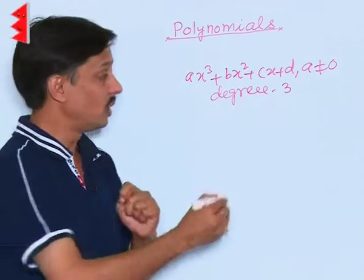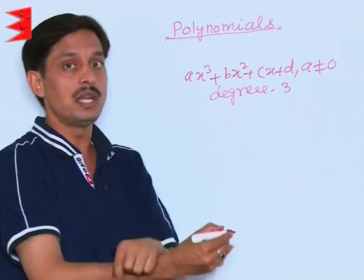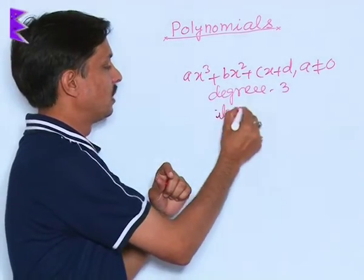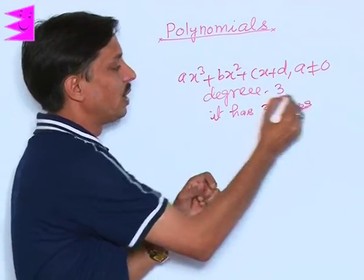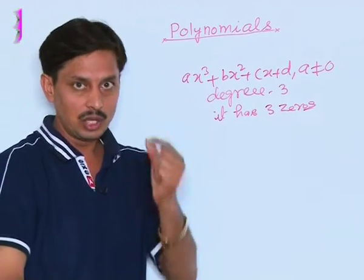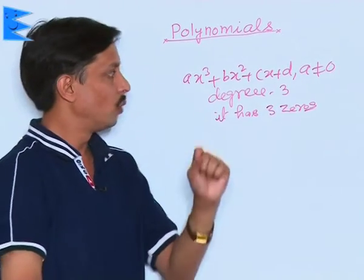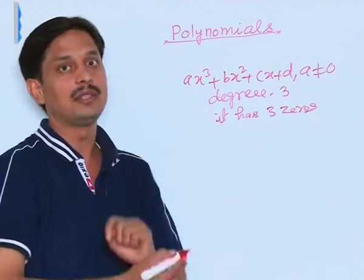If its degree is 3, how many zeros does it have? A cubic polynomial has 3 zeros. What is the meaning of 3 zeros? It has 3 values of x which can make this result equal to 0.